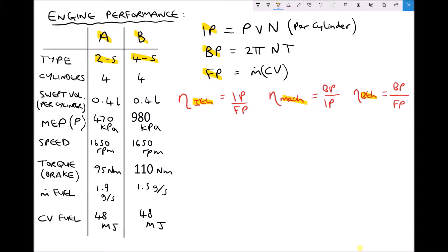We have something called the mean effective pressure, which is the average pressure being delivered by the cylinder during the power stroke. For our two stroke engine we have a value of 470 kPa and for the four stroke engine we have a value of 980 kPa. Both of our engines are rotating at 1650 rpm. Our two stroke engine is delivering 95 Nm of braking torque and the four stroke engine delivers 110 Nm of torque. The mass flow rate of fuel into our two stroke engine is 1.9 g/s and into our four stroke engine it's 1.5 g/s, and both diesels have a calorific value of 48 MJ/kg.